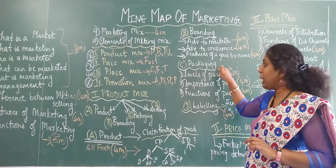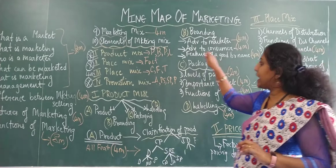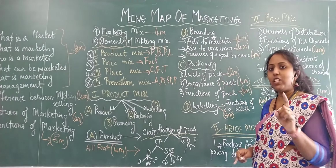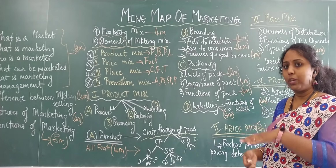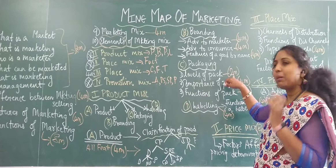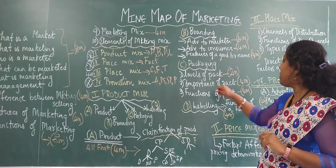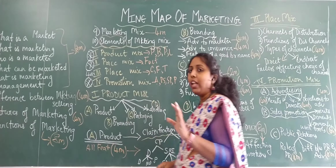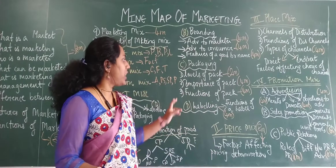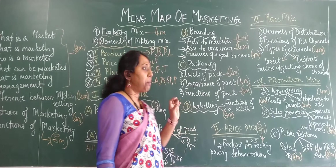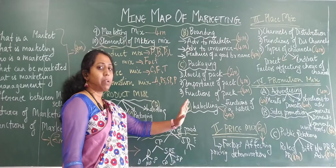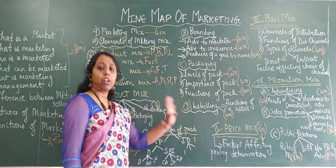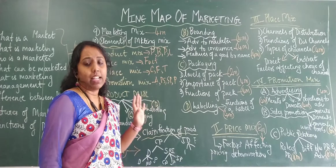The next thing is packaging, which again comes under product mix. Under packaging, you have levels of packaging — level one, two, and three — which will come as a two marker. Then you have importance of packaging, which will come as a four marker, and functions of packaging, again for a four marker. Please make sure you're writing down the mind map so you know what comes under the marketing chapter.